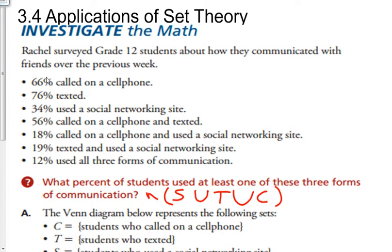So what percent of students used at least one of these three forms of communication? How we can denote that is it's the number of students that used social networking or texting or cell phone.